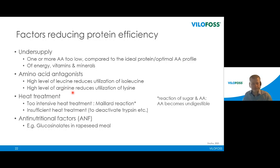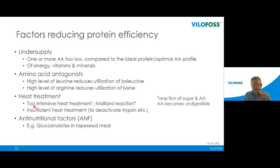Heat treatment can also reduce protein efficiency. The most typical case is with heat-treated products like soybean meal or DDGS — with too intensive heat treatment, lysine in the presence of sugars like glucose will react, making lysine undigestible. On the other hand, insufficient heat treatment will not deactivate the enzymatic inhibitors, again resulting in poor utilization. Other anti-nutritional factors such as glucosinolates in rapeseed meal are also relevant in this context.